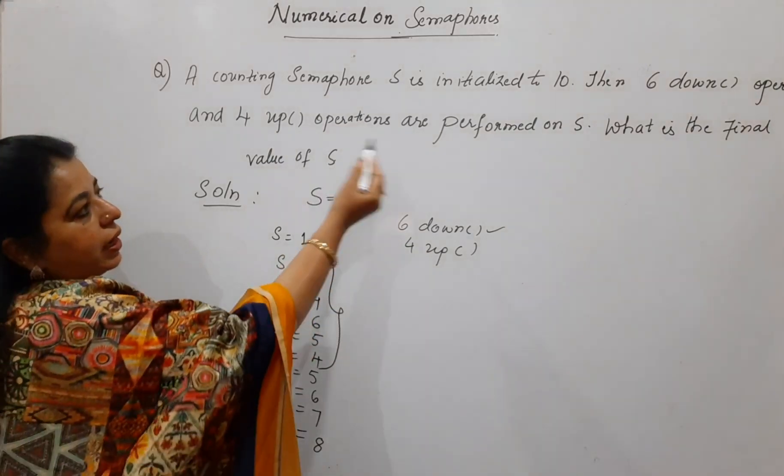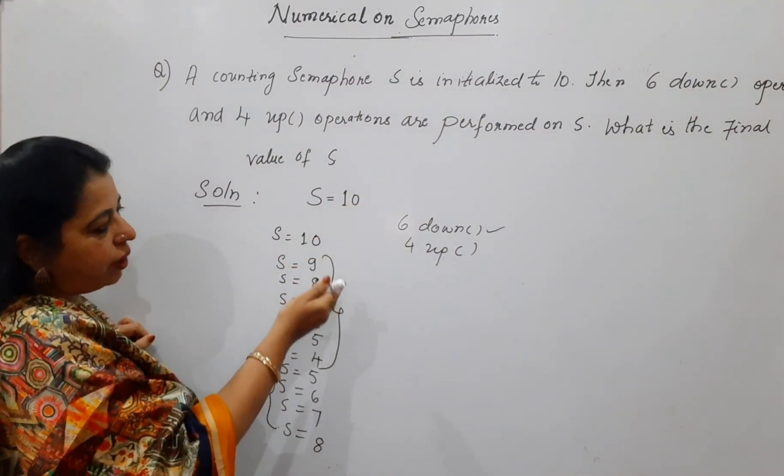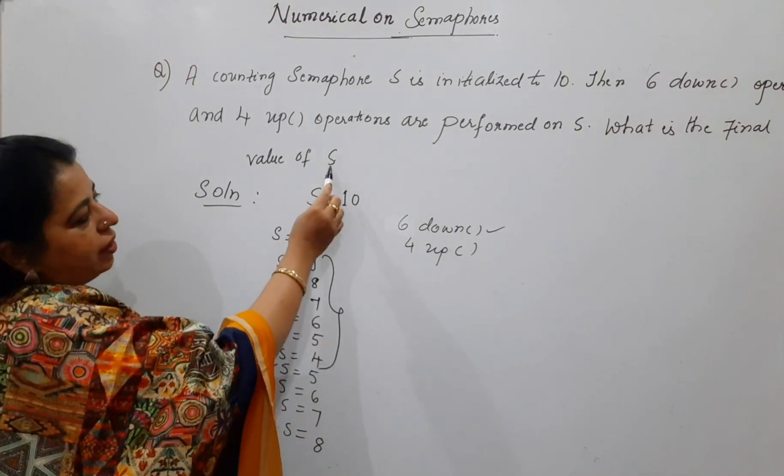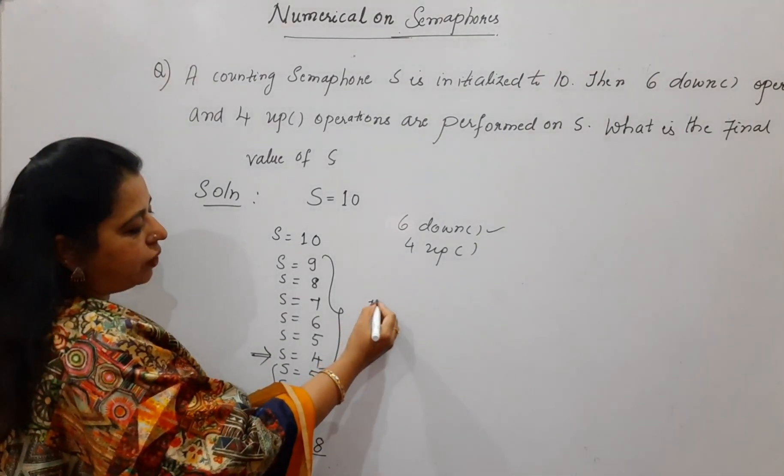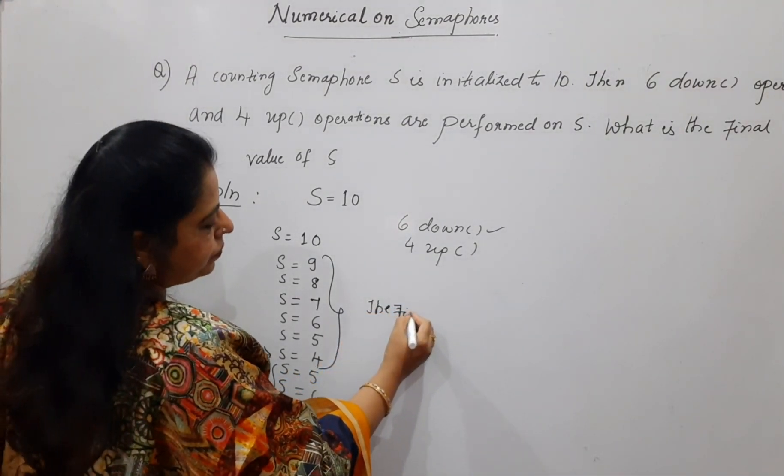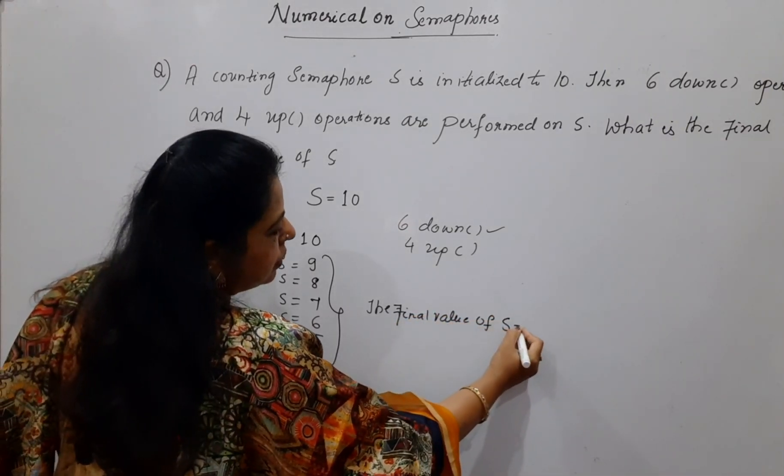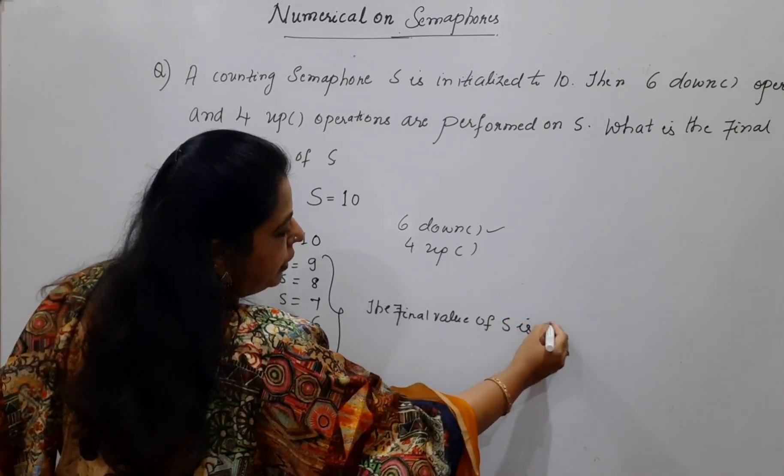From here to here is your down operations. So, like this, there can be any number given here. I am just telling you the logic. 6 down and 4 up will give you what the final value in this case. The final value in this case is S equal to 8. So, you can write down the final value of S is 8 now.